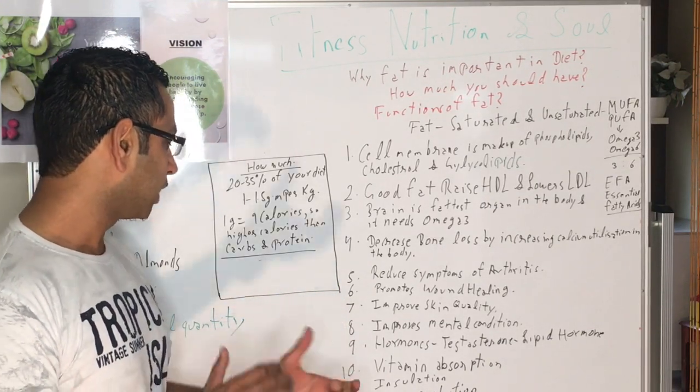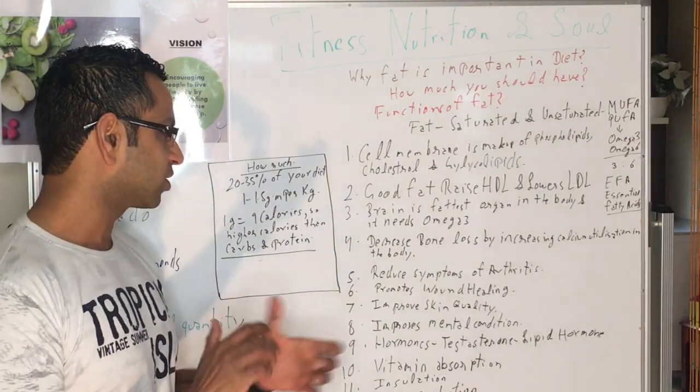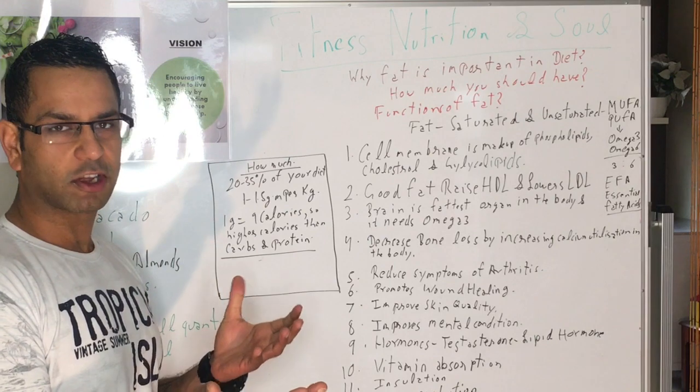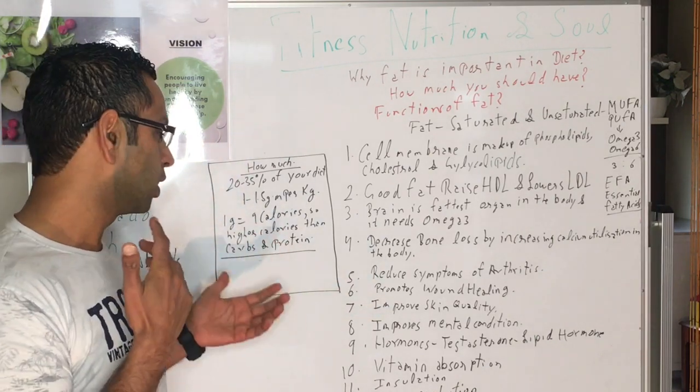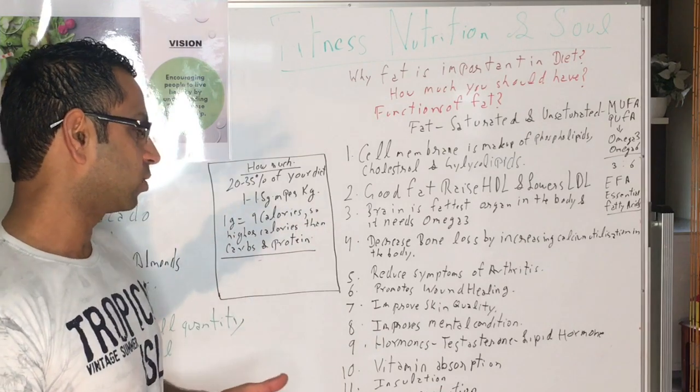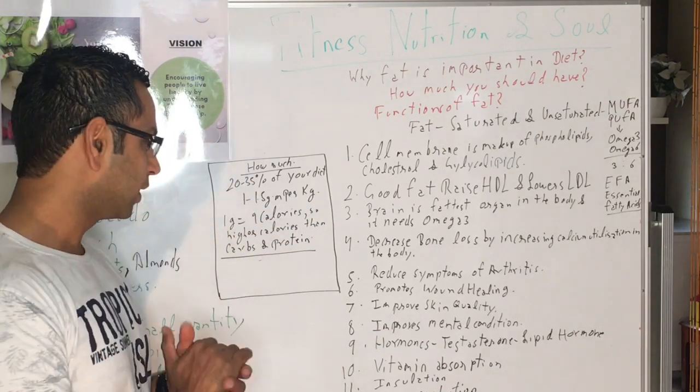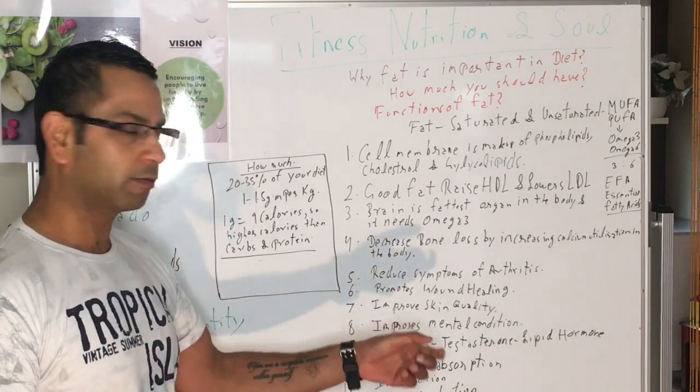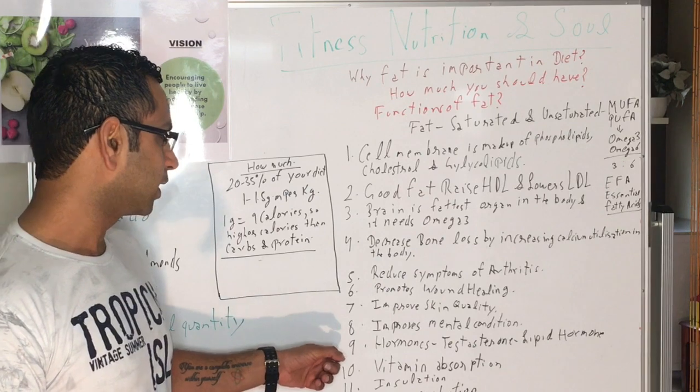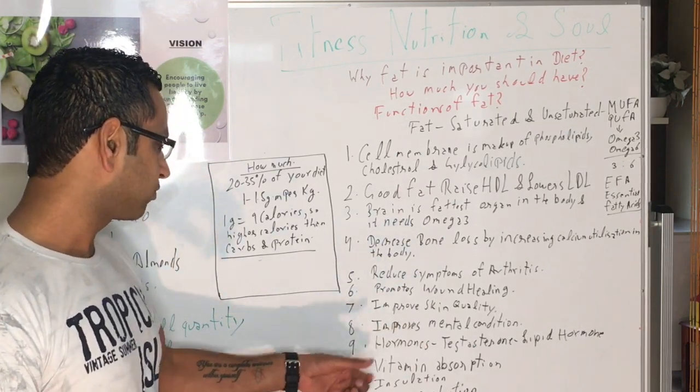The ninth function is hormones, specifically testosterone. There are two types of hormones: water-based hormones and fat-based hormones. Testosterone is one of the fat-based hormones. It's made from cholesterol and saturated fat. Saturated fat is really important for testosterone production.